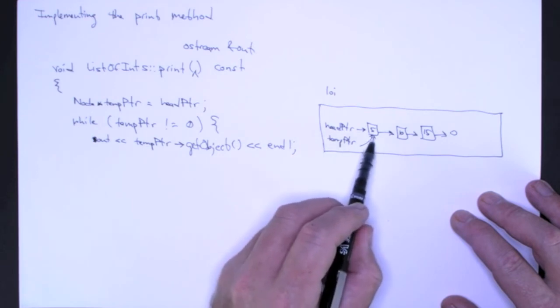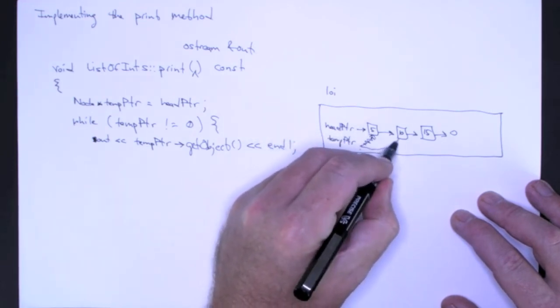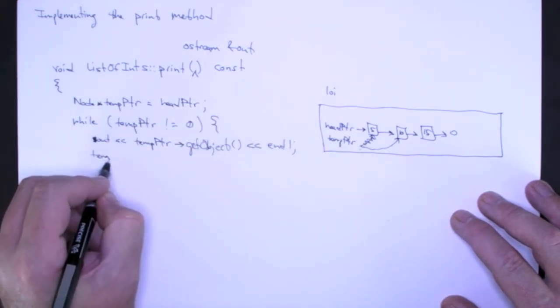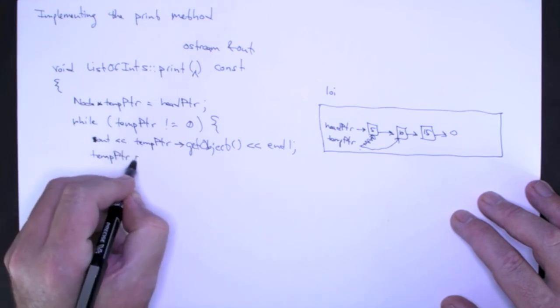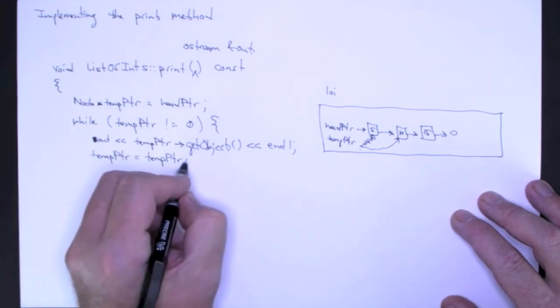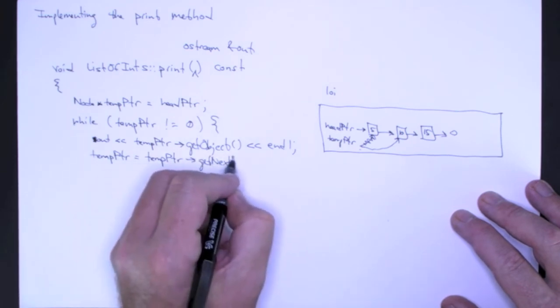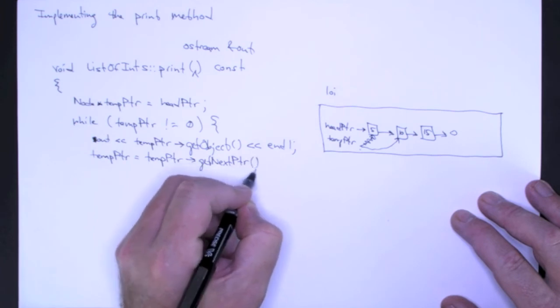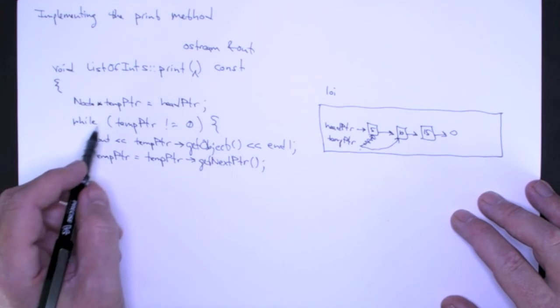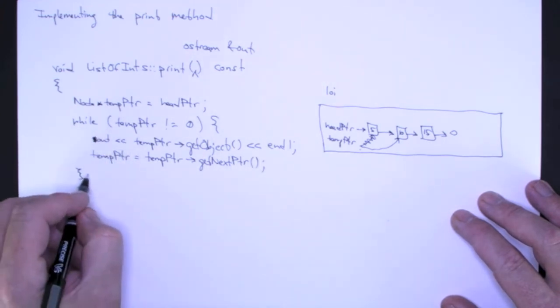Now that I've printed this object, I can advance the pointer to the next node in the list. To do that I say temp pointer is equal to temp pointer get next pointer. And that sets me up to print the next element, which by looping I'll do that. So that is the end of my while loop.